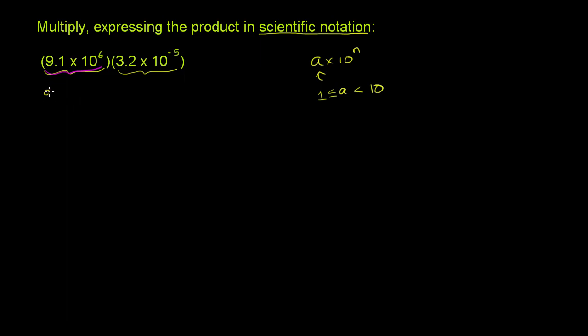So this is equal to 9.1 times 10 to the sixth times 3.2 times 10 to the negative fifth power. Now in multiplication, this comes from the associative property, essentially allows us to remove these parentheses.